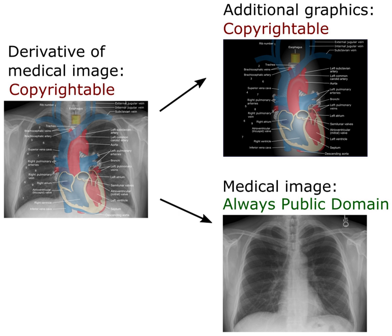Development of CC0 began in 2007 and was released in 2009. A major target of the license was the scientific data community. In 2010, Creative Commons announced its public domain mark, a tool for labeling works already in the public domain. Together, CC0 and the public domain mark replace the public domain dedication and certification, which took a US-centric approach and co-mingled distinct operations.